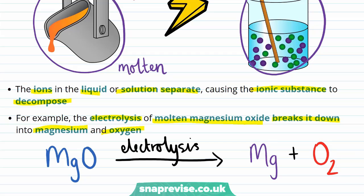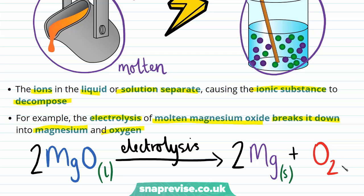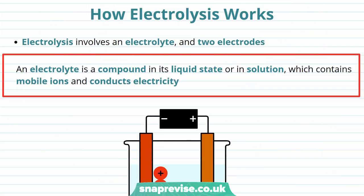We just need to balance this equation by adding a 2 in front of magnesium oxide and a 2 in front of magnesium. The magnesium oxide in the electrolysis process is molten, which means that it is a liquid. This molten magnesium oxide is broken down into solid magnesium and oxygen gas. The electrolysis setup involves two key components: what is known as an electrolyte and two electrodes.